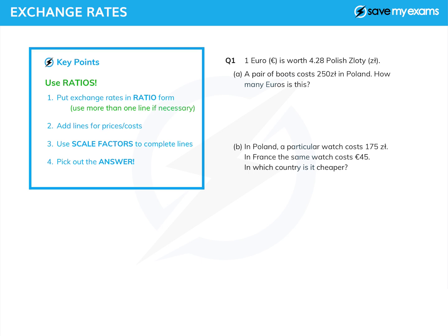So let's follow the rules. Let's do euros to zloty, and we see that is 1 to 4.28 — that's our exchange rate. And then let's have a line for the cost of the boots. They cost 250 zloty there, and the answer we want is going to appear on the euros side.